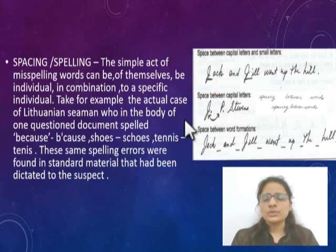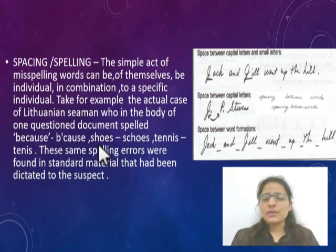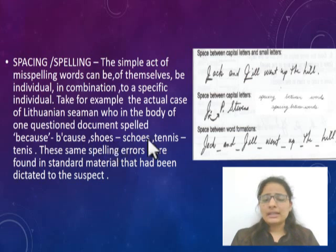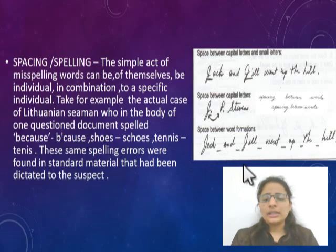For spelling, some people write 'because' as B-E-C-A-U-S-E, while the spelling of 'shoes' may be written as C-S-C-H-O-E-S, and 'tennis' as T-N-I-S. So spelling patterns can be helpful in identifying the individual.